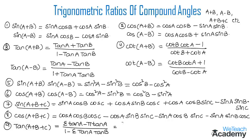We can also write the tan(A+B+C) formula as S1 minus S3 divided by 1 minus S2, where S1 represents the sum of the tangents taken one at a time, S2 represents the sum of the products of the tangents taken two at a time, and S3 represents the sum of the products of tangents taken three at a time. Similarly, cot(A+B+C) is equal to sigma cot A minus pi cot A divided by 1 minus sigma cot A cot B, which equals S1 minus S3 divided by 1 minus S2, where S1 is the sum of cotangents taken one at a time, S2 is the sum of products of cotangents taken two at a time, and S3 is the sum of products of cotangents taken three at a time.